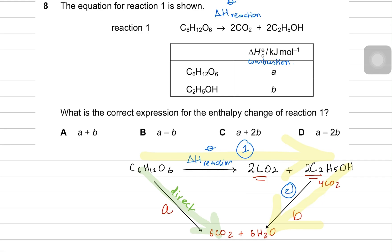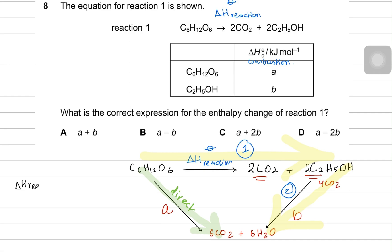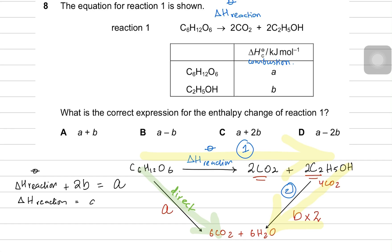Our equation becomes very simple: enthalpy for reaction plus 2B equals A, because you are using 2 moles of ethanol so you multiply B by 2. If you want the enthalpy for reaction, you rearrange to get A minus 2B, so A minus 2B is the correct answer.